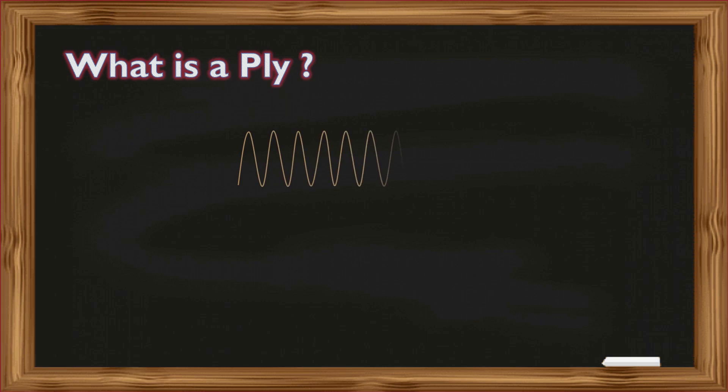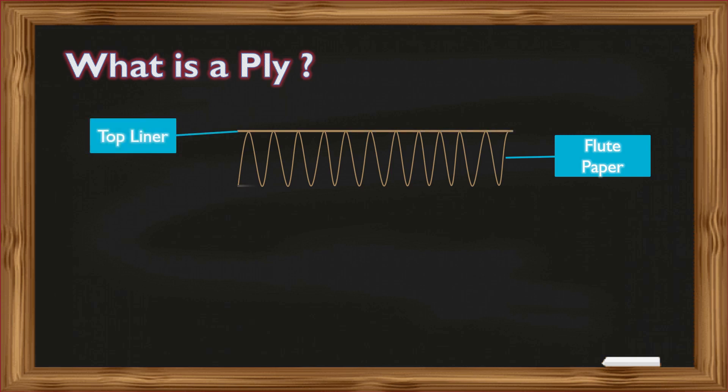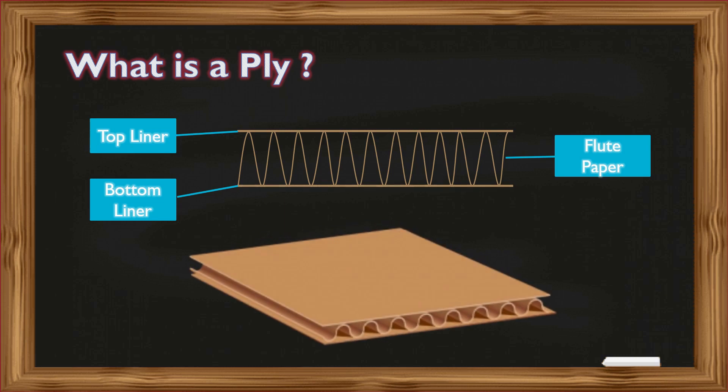A corrugated board is made by sandwiching a corrugated paper, also known as a flute paper, in between two plain papers called as top liner and bottom liner respectively. A three-ply board refers to two plain paper plus one corrugated paper.